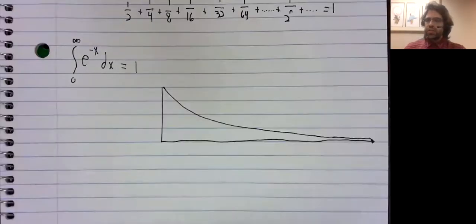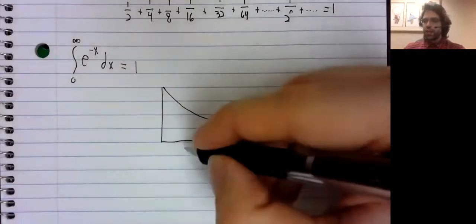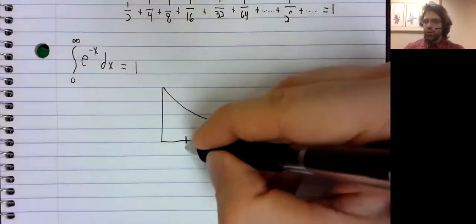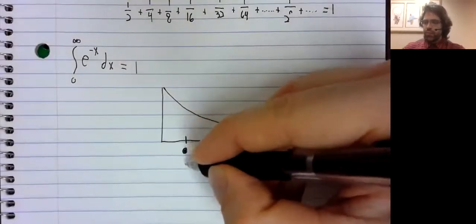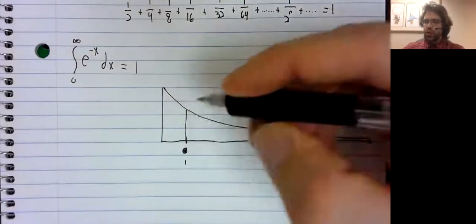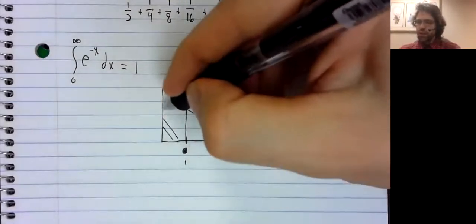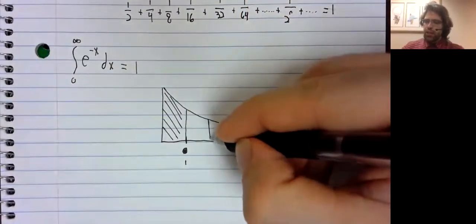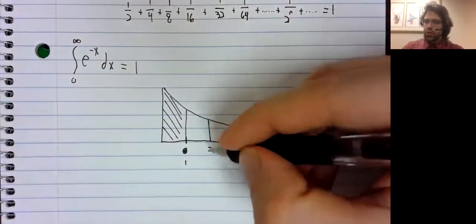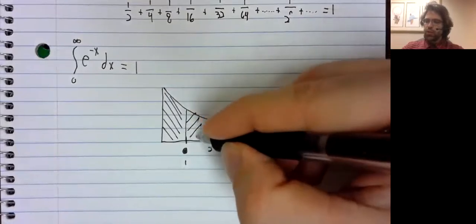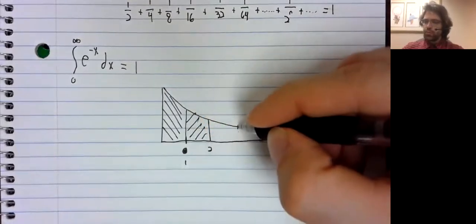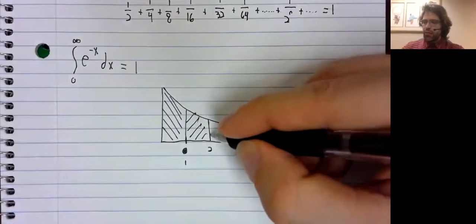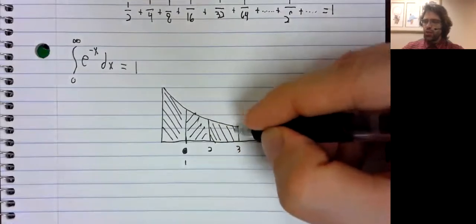Now this integral is the area under the curve over an infinite interval. It should make sense that if you take the area under the curve from zero to one, and you take the area under the curve from one to two,